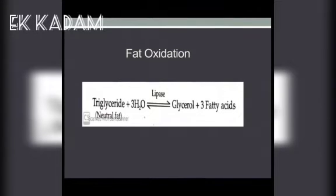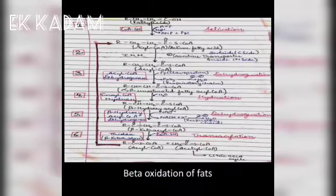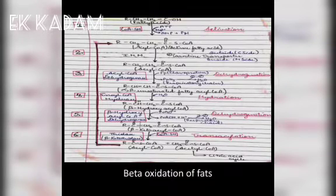Now we will see the basic reaction of beta-oxidation and some further reactions. In the basic reaction, fats are hydrolyzed into glycerol and three molecules of fatty acids in the presence of the enzyme lipase. There are six reactions which occur during the beta-oxidation of fatty acids: first is activation, second is transportation, third is dehydrogenation, fourth is hydration, fifth is dehydrogenation again, and sixth is thiolysis.